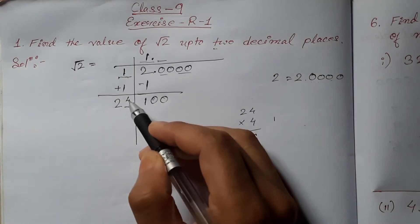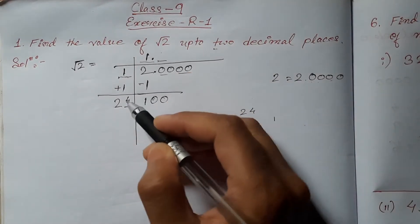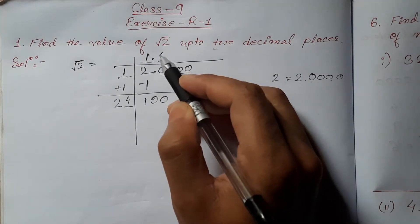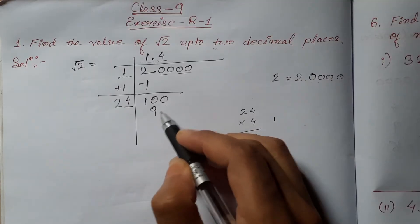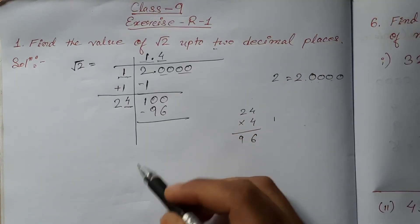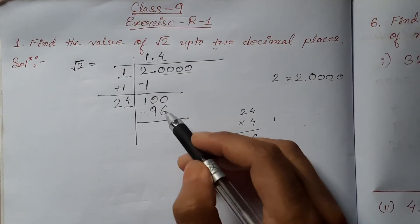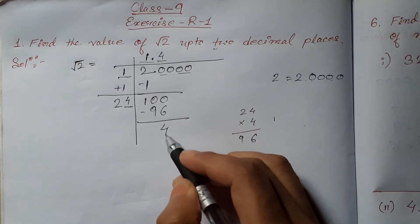4 in the quotient place. Sorry, 4 in the divisor place and 4 in the quotient place. So, 24 multiplied by 4 is 96. Now, subtract 100 minus 96. We will get 4.